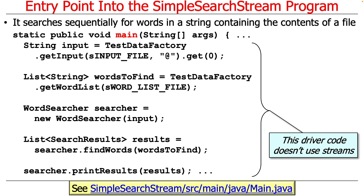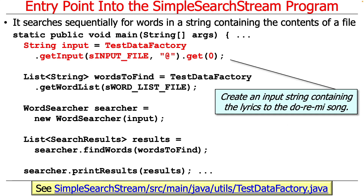Let's talk about the main program — this gives you the driver for this thing. It sequentially searches for words in a string that contains the contents of the file, which is the Do Re Mi song. The driver code doesn't actually use Java streams; it's just good old Java object-oriented programming, showing that you can make these two paradigms work together very nicely.